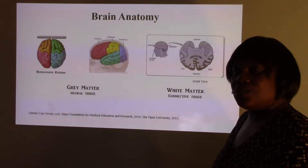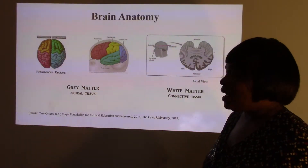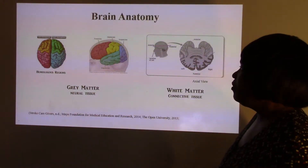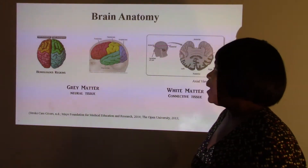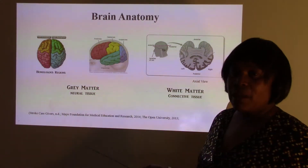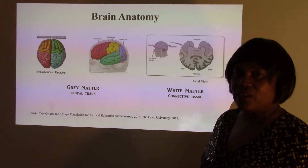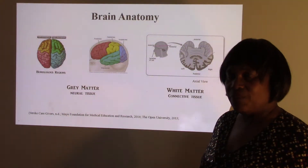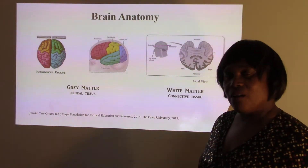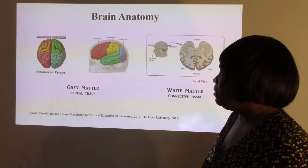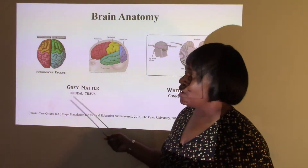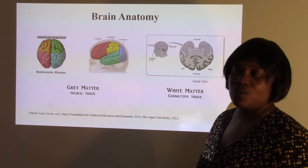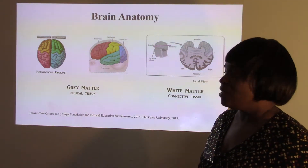Now we need to look at the basic structure of the brain before we proceed. We know that the brain is made up of two hemispheres — the left hemisphere and the right hemisphere. These hemispheres are homologous, meaning whatever is on the left side of the hemisphere is also found on the right side.